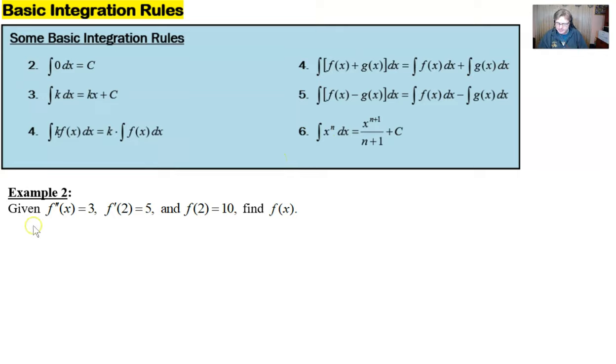We're looking at example two that says if you are given the fact that f double prime of x is 3 and f prime of 2 is 5 and f of 2 is 10, we want you to find f of x.